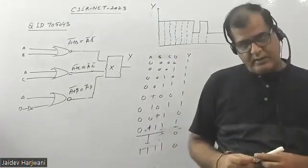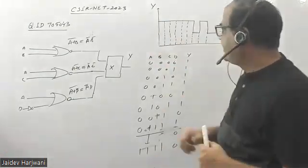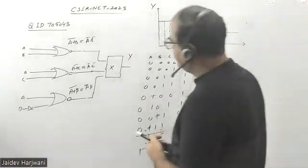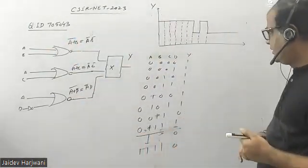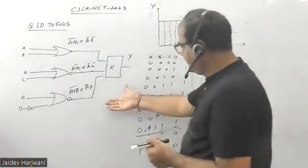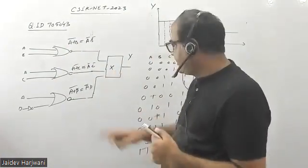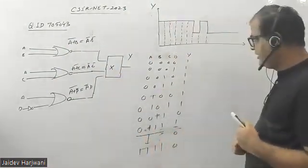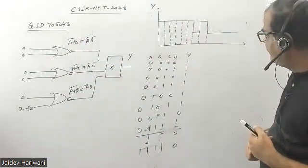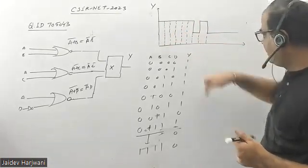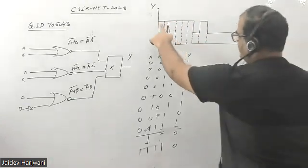Hello students, let us solve a problem from the recently concluded CSIR NET exam. The question ID is 070504-3. In this question, they have given you a logic gate circuit and they are asking: what is X? What is this X-bar here, which is giving you the output? They have given you the input in the form of a waveform and also the output.